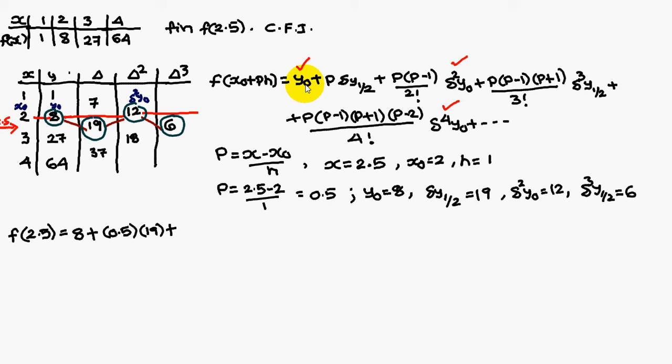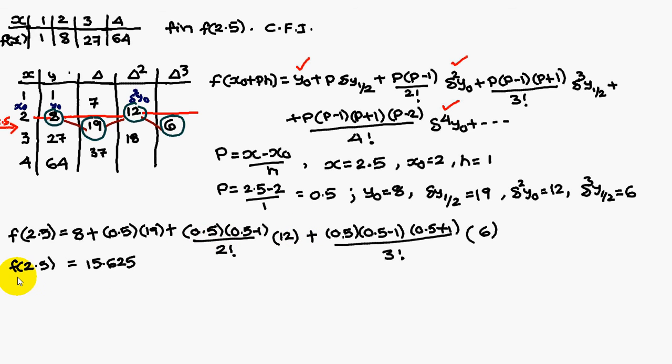Y0, y0 is 8, substitute y0, p is 0.5, delta y half is 19, and you go on substituting here. You are going to get f of 2.5 as 15.625. f of 2.5 is 15.625. Thank you.